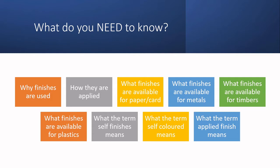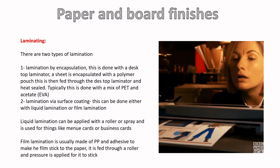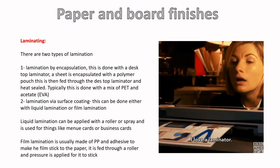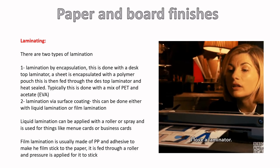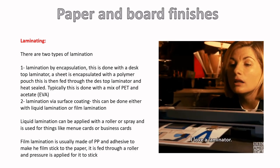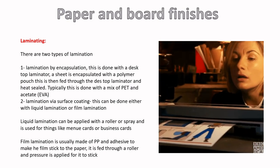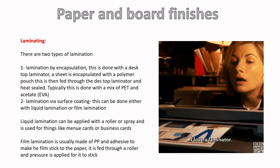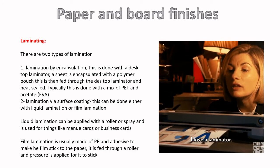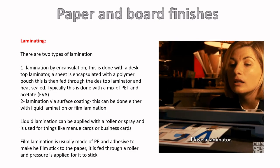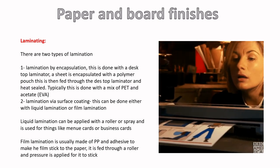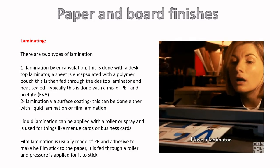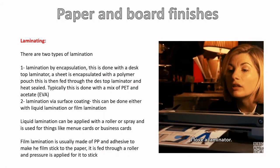We'll start with paper and board. The first finish is laminating, and there are two kinds. The first is lamination by encapsulation — that's the one where you put your paper or card inside a plastic wallet made of PET and acetate. PET is the same material plastic bottles are made from. You put it through the laminator, which heats the plastic so it melts and seals around what you're laminating. It's common but not suitable for mass production.